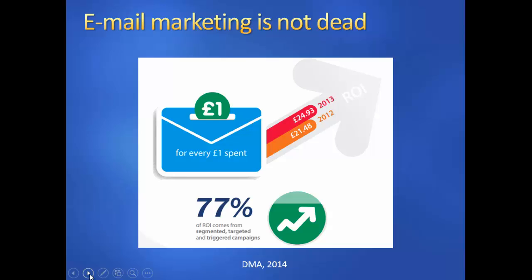The ROI from email marketing is also increasing. In 2012 it was found to return £21 for every £1 spent, and that was up to £25 for every £1 spent in 2013. It's important to note though that email is not magic — it needs care and attention in order to get this kind of success out of it. As the DMA say, 77% of ROI comes from segmented, targeted and triggered campaigns. Customers who have signed up to your newsletter don't really care about what you have to say unless it's of some value to them. So segmenting your email lists is key to ensuring that your customers are receiving only email content which is of relevance to them.